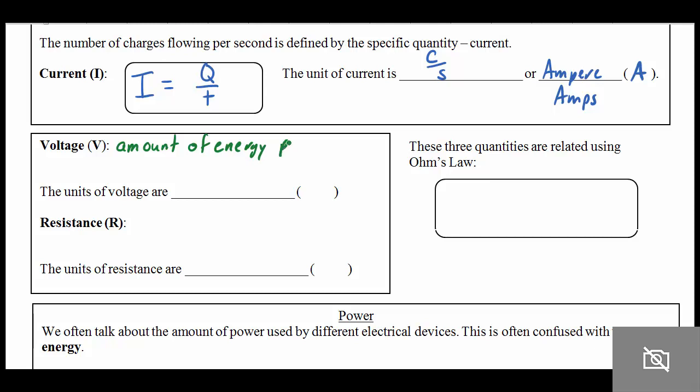So it's the amount of energy pushing the electrons. For example, more volts, more push. The units of voltage are volts, and the symbol for that is capital V.